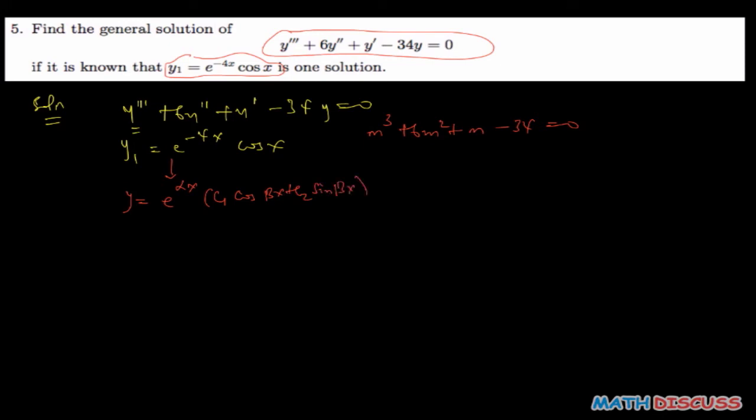Now on comparing this, you'd observe that this, which is -4 here, is going to be α here, and then the 1 here is going to be your β here. So that implies you're saying your α = -4, and then your β = 1.